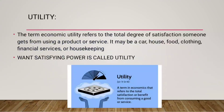A consumer will buy things based on their own utility. What is meant by utility? Utility means want-satisfying power. If you are hungry and you go to a restaurant and eat food, that food has want-satisfying power — it satisfied your hunger. The term economic utility refers to the total degree of satisfaction someone gets from using a product or service. It may be a car, a house, food, clothing, financial services, or housekeeping. Anything which satisfies a want is called utility.